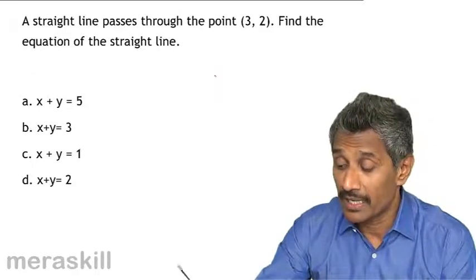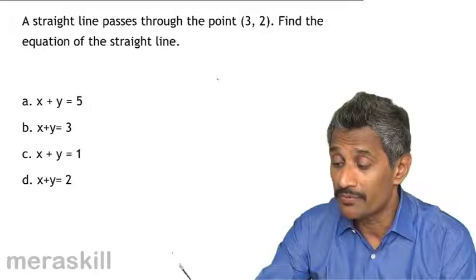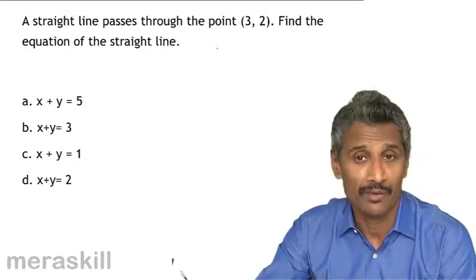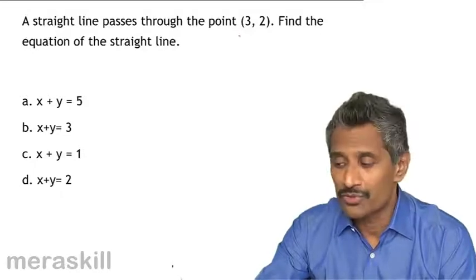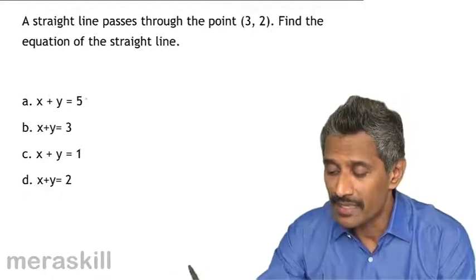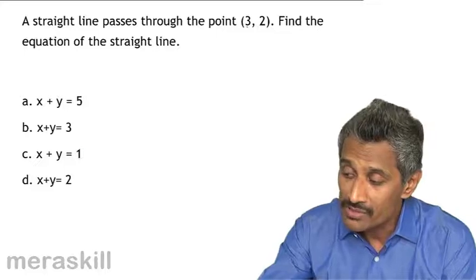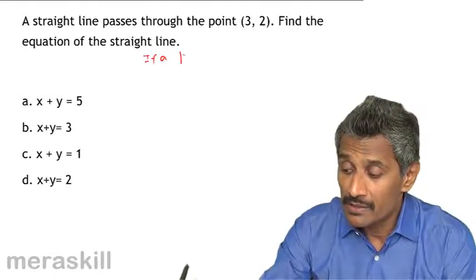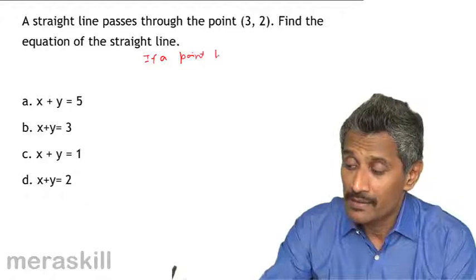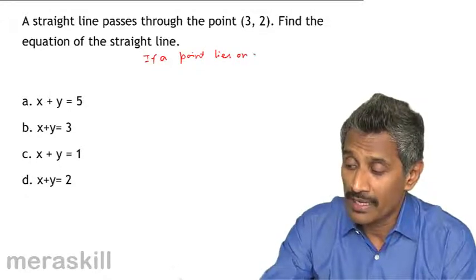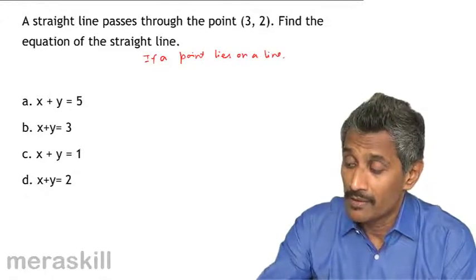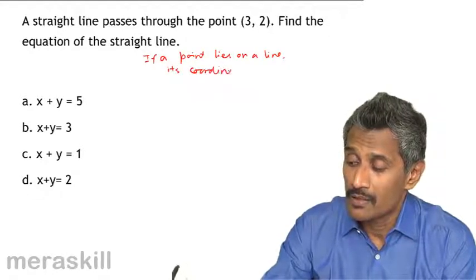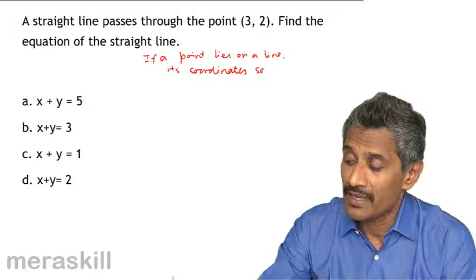Now, finding the equation of a straight line or looking at it, you may feel, how do I find? Now, there is hardly any information presented over here. In simple ways, it actually means which among these lines is the line on which this point could lie. Now, if a point lies on a line, its coordinates satisfy the equation.